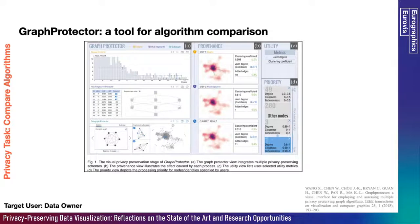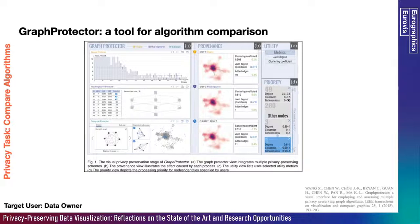Next we have the privacy task of comparing algorithms. In order to understand the effectiveness of each privacy preserving scheme, the data owner must compare all these algorithms. This is the interface developed by Wang et al. named Graph Protector. On the left-hand side we have the Graph Protector view, which integrates multiple privacy preserving schemes. On the right-hand side we see the Provenance view, which shows the effect caused by each process. We also have the Utility view and the Priority view, which shows the processing priority for each node.